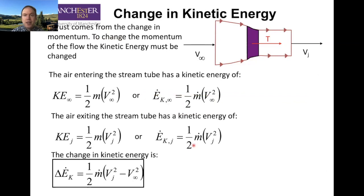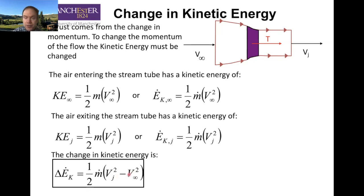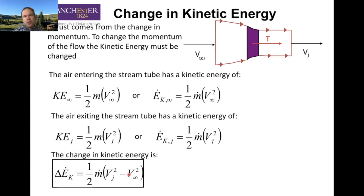To produce thrust, we accelerate the fluid, which gives us a change in kinetic energy. Unlike momentum, which is related to velocity linearly, kinetic energy is related to velocity squared. So our delta in kinetic energy is one-half the mass flow times the quantity v-j squared minus v-infinity squared. For a rocket, what do you think v-infinity is? For a jet engine, what is v-infinity? As you can see, thrust goes up linearly with velocity, while kinetic energy goes up with the square of velocity difference — something that will matter when we get to efficiencies.